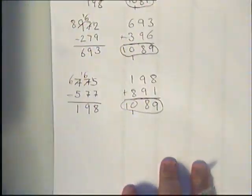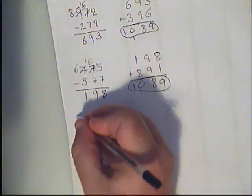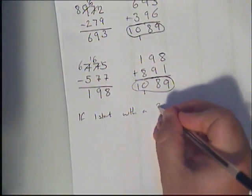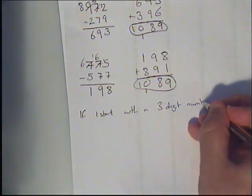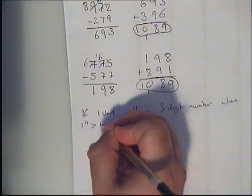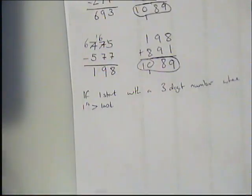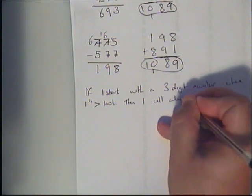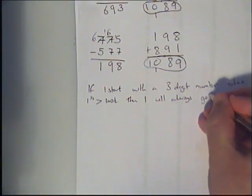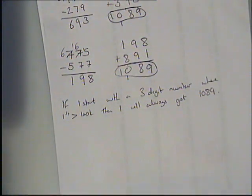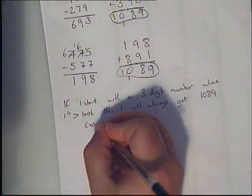I've got the same answer three times, so I'm going to write a conjecture: if I start with a three-digit number where the first digit is bigger than the last, then I will always get 1089. I'm going to put some exclusions in here — I'm thinking out loud and I could check these, but I'll put exclusions.